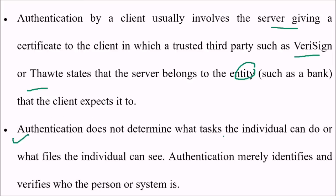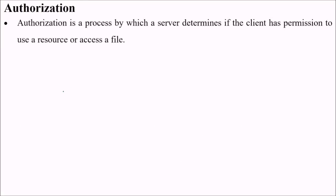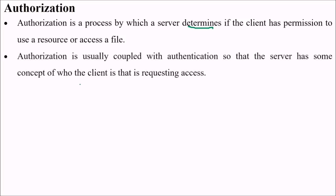Authentication does not determine what tasks an individual can do or what files the individual can access. Authentication merely identifies and verifies who the person or system is. In authorization, it is the process by which the server determines whether the client has permission to use a resource or access a file.